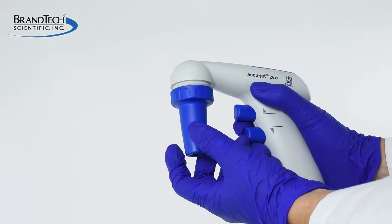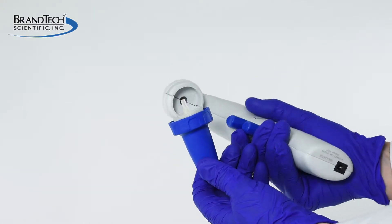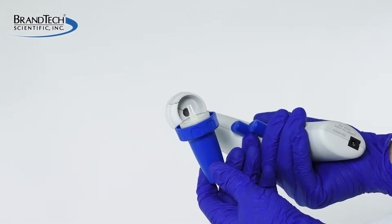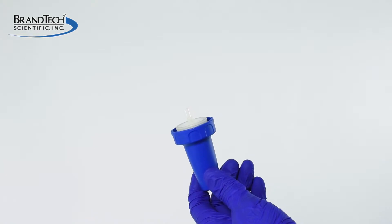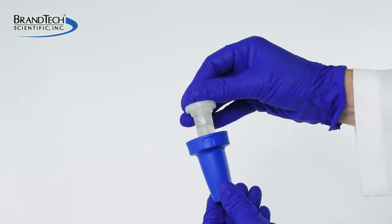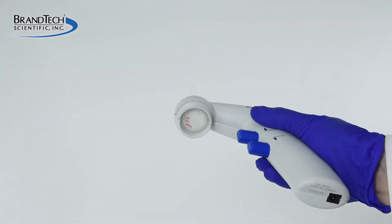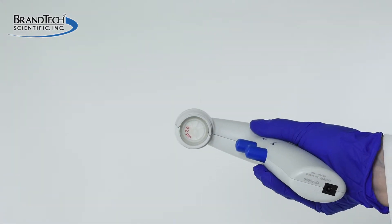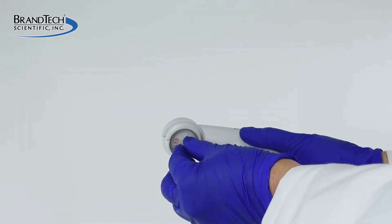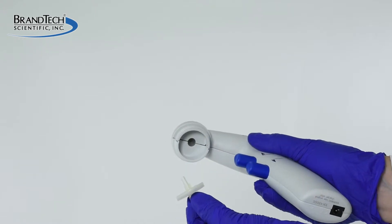Remove the filter from the AccuJet by grasping the adapter's support and unscrewing it from the body of the AccuJet. The filter will most likely protrude from the silicone pipette adapter, but might possibly be lodged inside the body of the AccuJet. Grasp the fitting and remove the filter from the AccuJet.